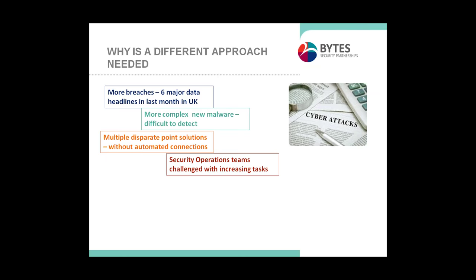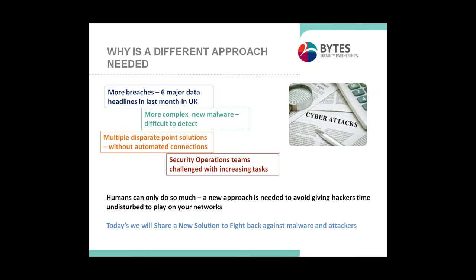The Verizon Data Breaches Report last year showed that around 200 days is the average time to detect a breach within your organization. As a security partner, we're always looking at ways to enable security teams to close that gap and turn that detection rate into days. Basically, humans can only do so much. A new approach is needed to avoid giving hackers time to play undisturbed, and that's why we've chosen to introduce you to Trapex today.